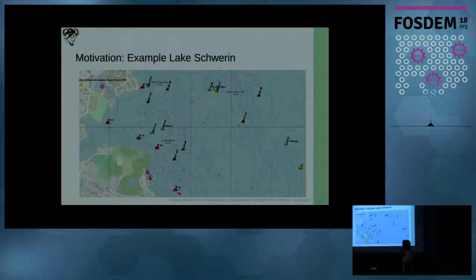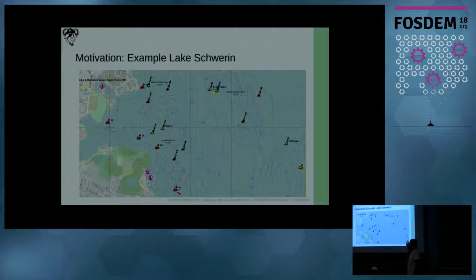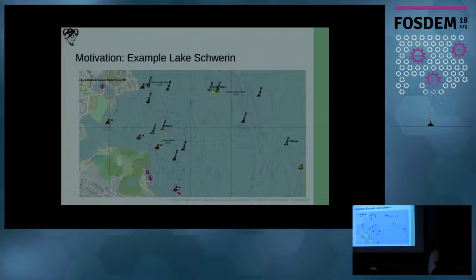This is also an OpenSeaMap map, and it's actually pretty good — somebody donated a lot of data and painted depth maps here for Lake Schwerin. It's one of the most detailed maps currently available on the whole project. It may actually be official data that was contributed; we're not entirely sure.